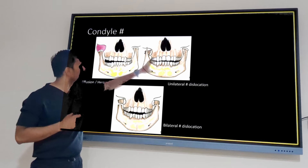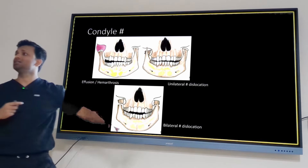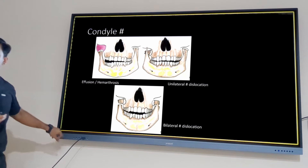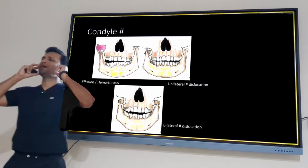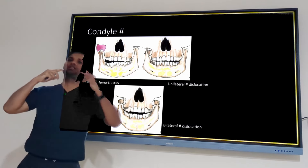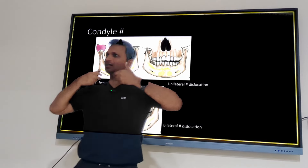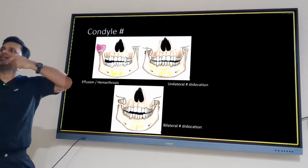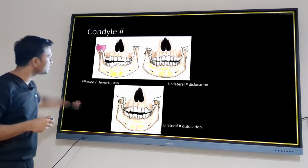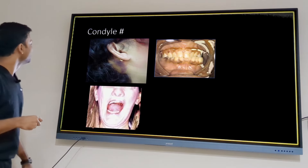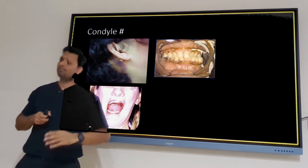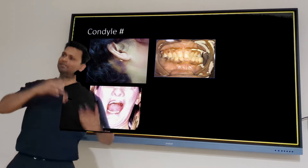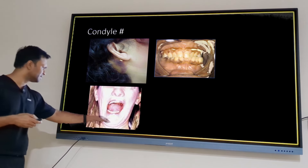In bilateral condylar neck fracture (extracapsular), height is reduced bilaterally, so posterior teeth contact prematurely on both sides — resulting in an anterior open bite. Clinical features include Battle's sign, malocclusion, crossbite, deviation, and anterior open bite depending on fracture type. Understanding the anatomy and biomechanics allows you to derive the clinical features.